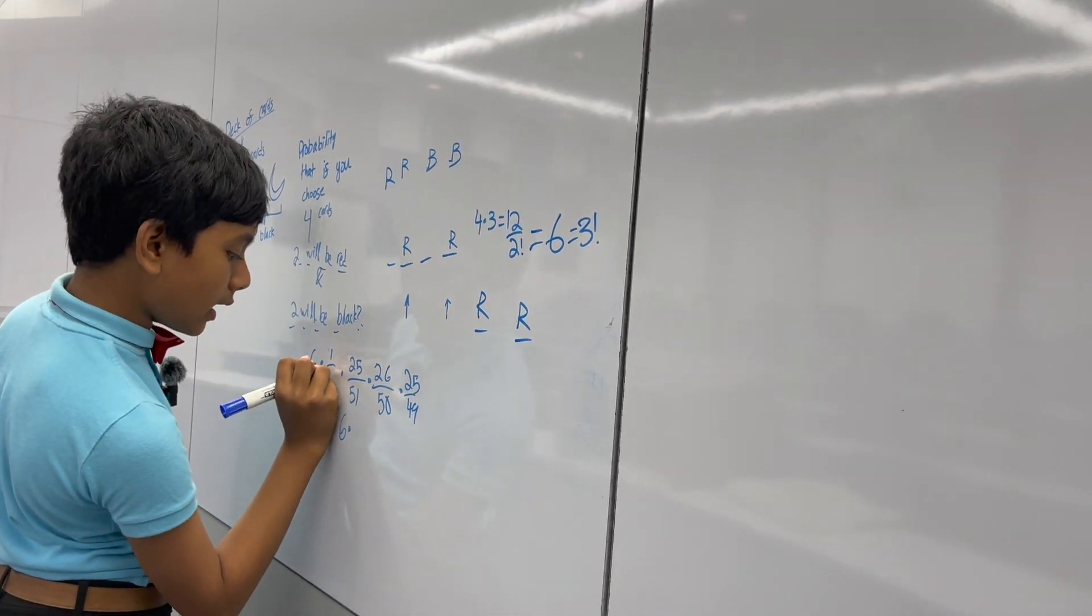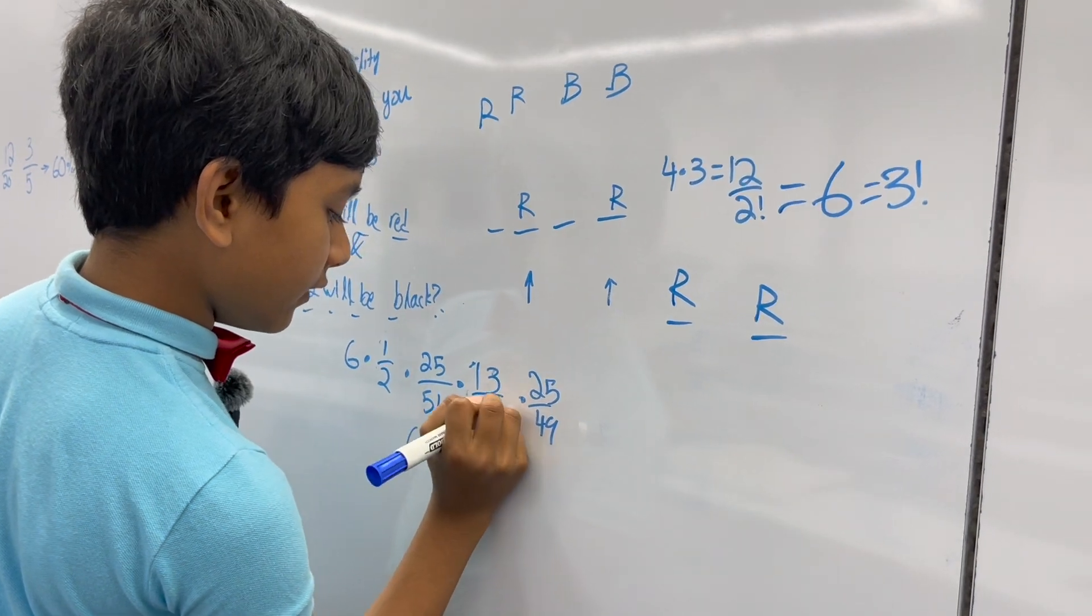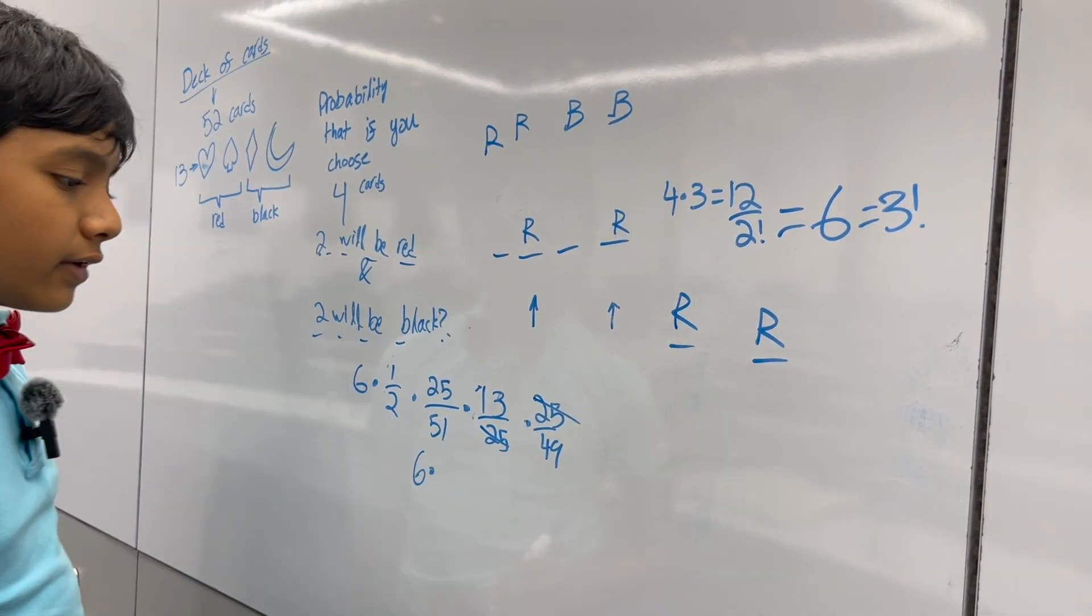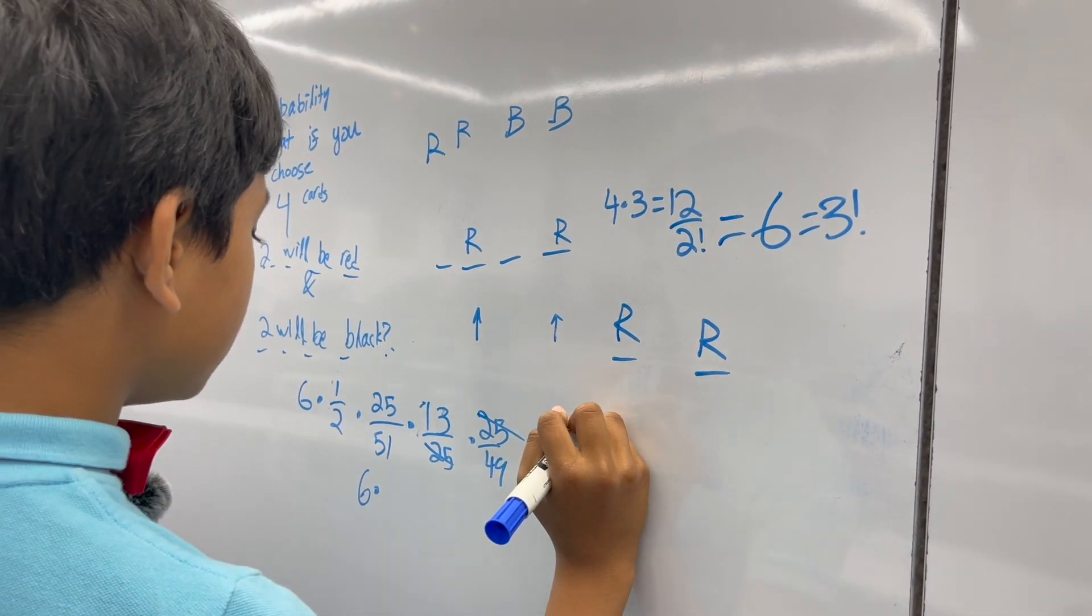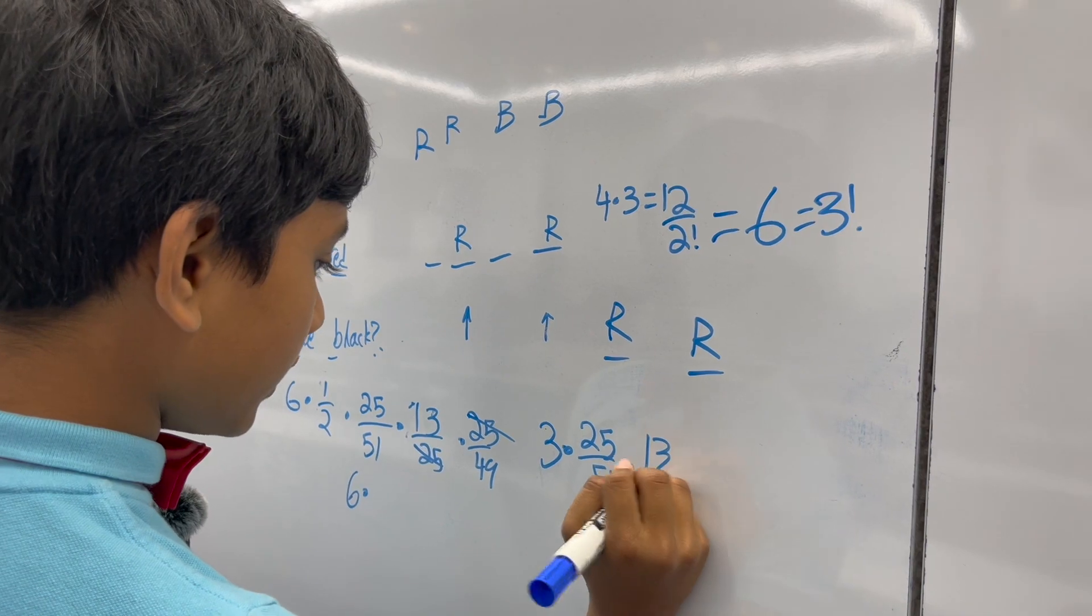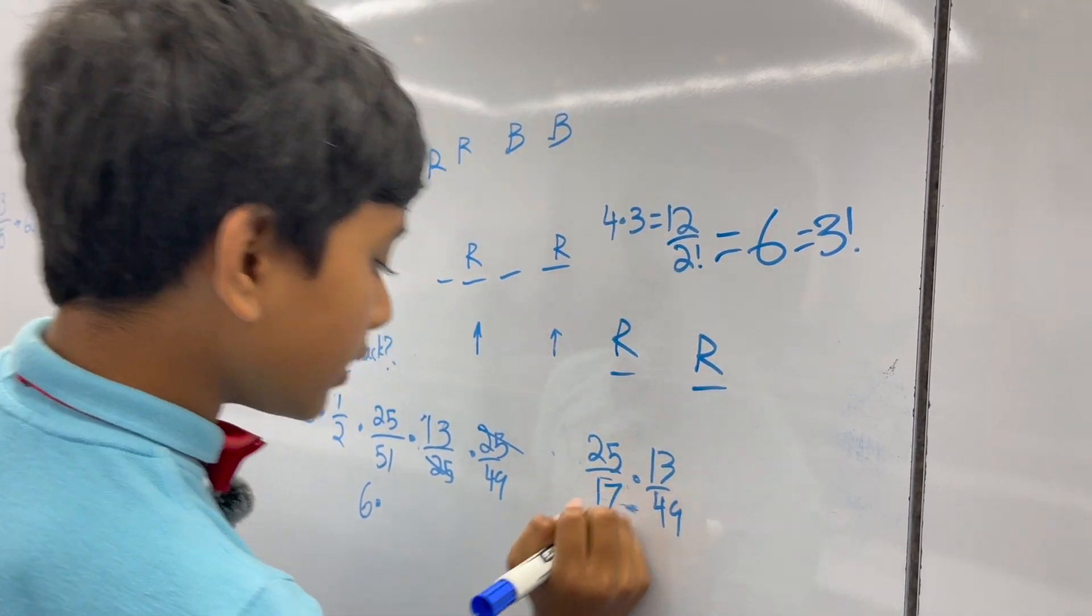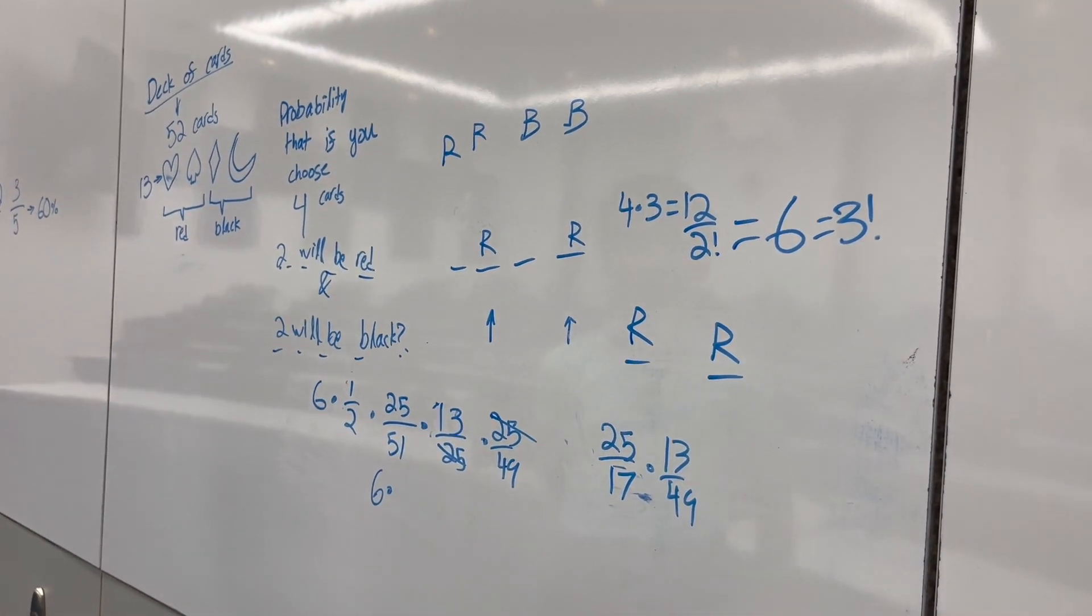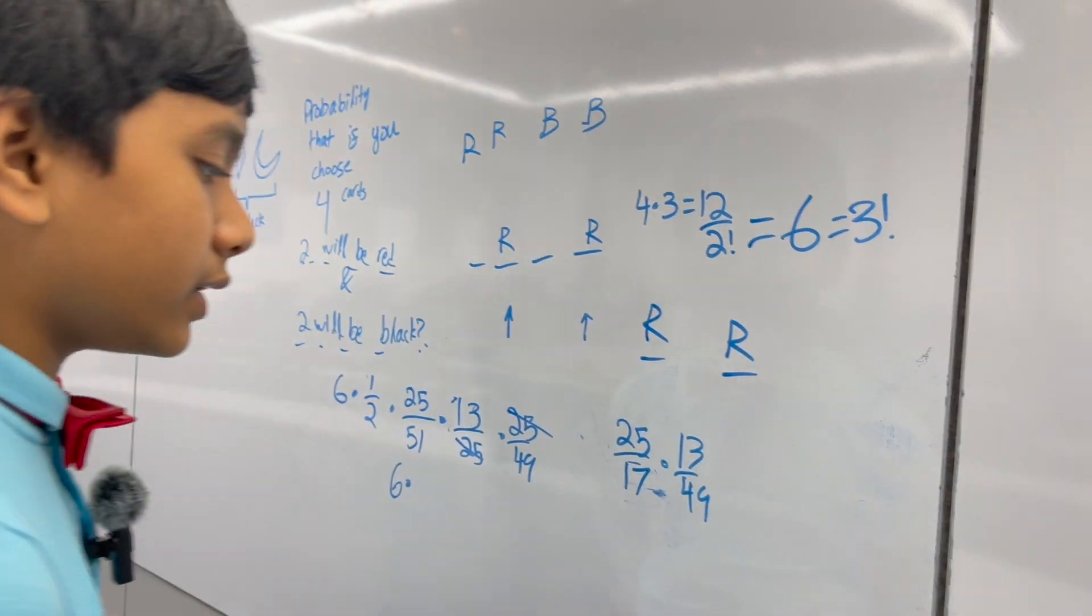I'm going to try reducing it. This one is a half. This one can be reduced to 13 25ths. 25 and 25 cancel out, giving us 3 times 25 over 51, times 13 over 49. And then, 3 and 51, 3 goes into 51, 17 times, giving us 25 times 13 over 17 times 49.